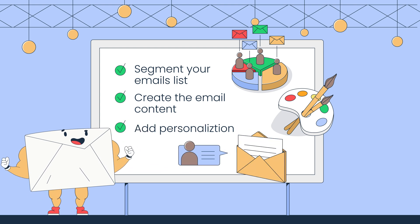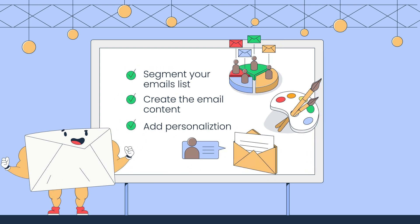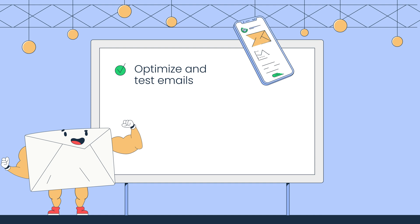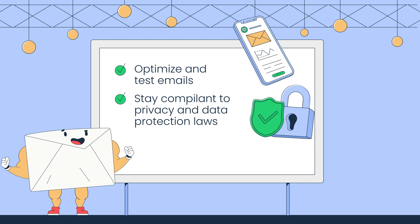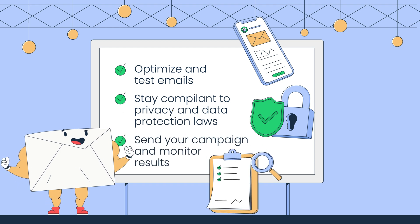6. Personalize your bulk emails with recipient data. 7. Optimize your emails and test them to ensure they're accessible to all your recipients. 8. Stay compliant by adding one-step unsubscribe options, sending emails to subscribed recipients only, and cleaning the list before sending the campaign. 9. Send your campaign and monitor the results constantly to make adjustments in future campaigns if necessary.